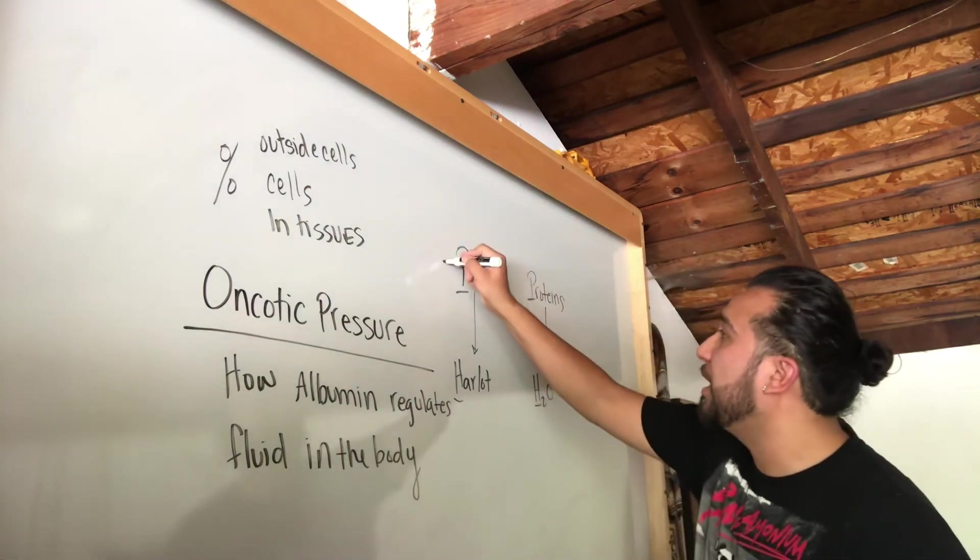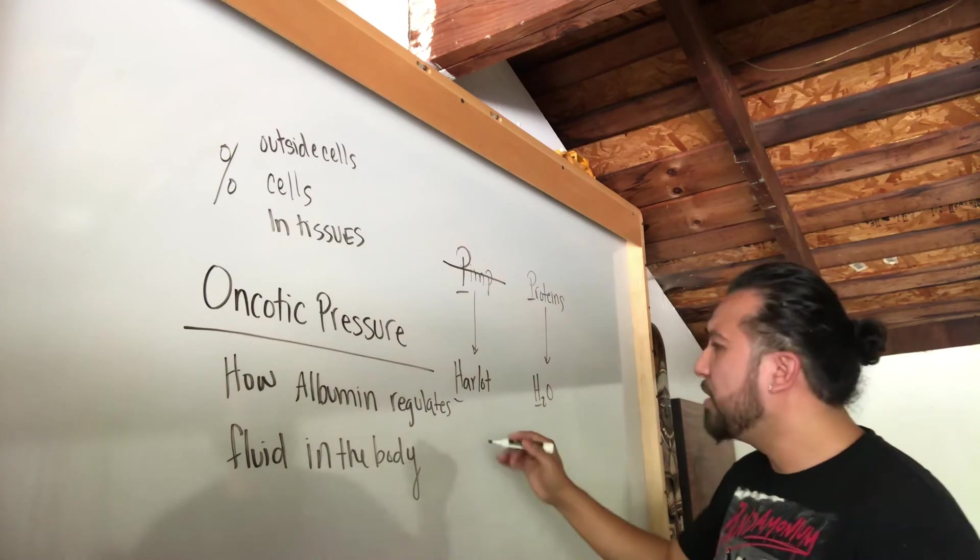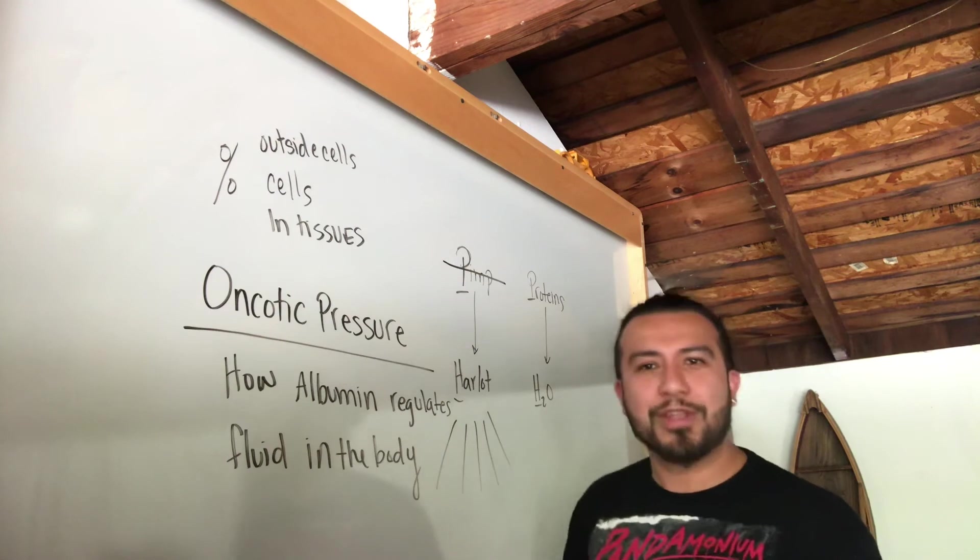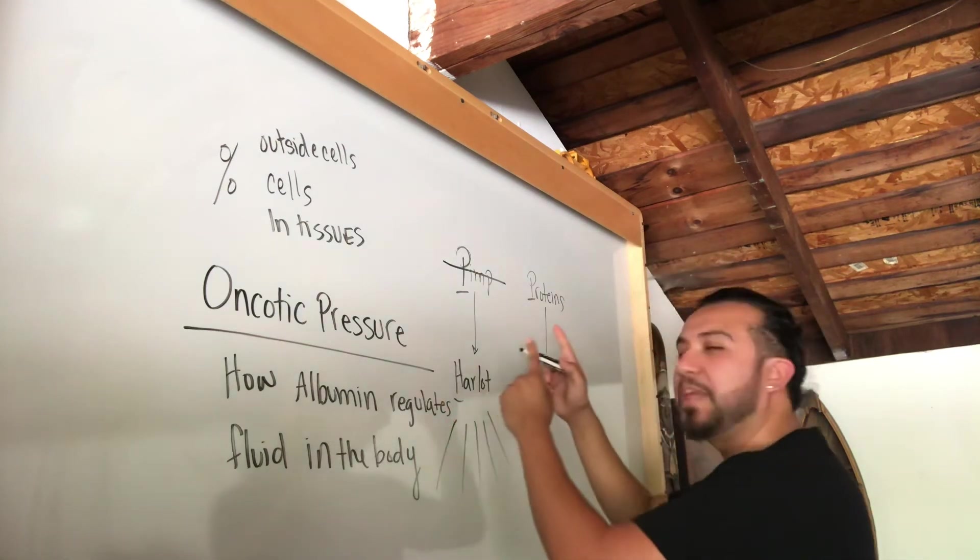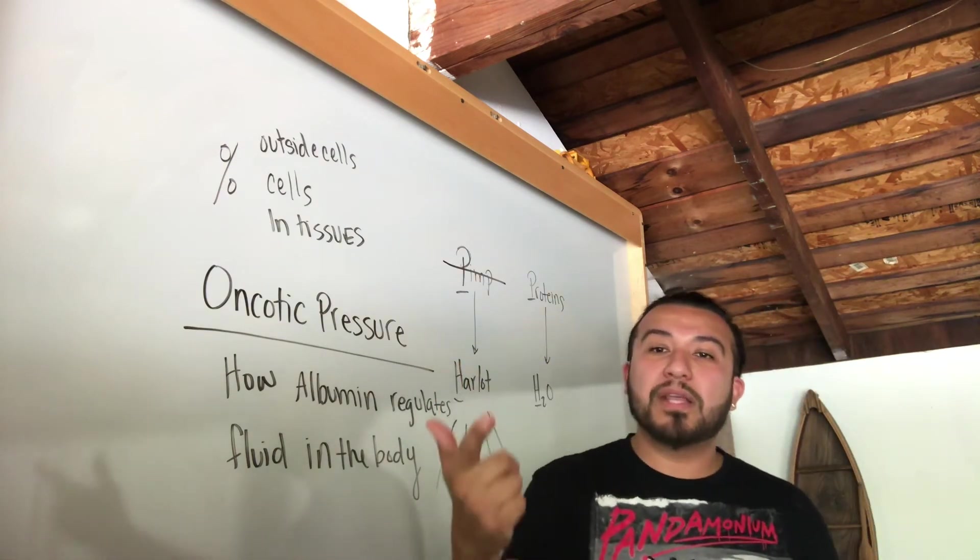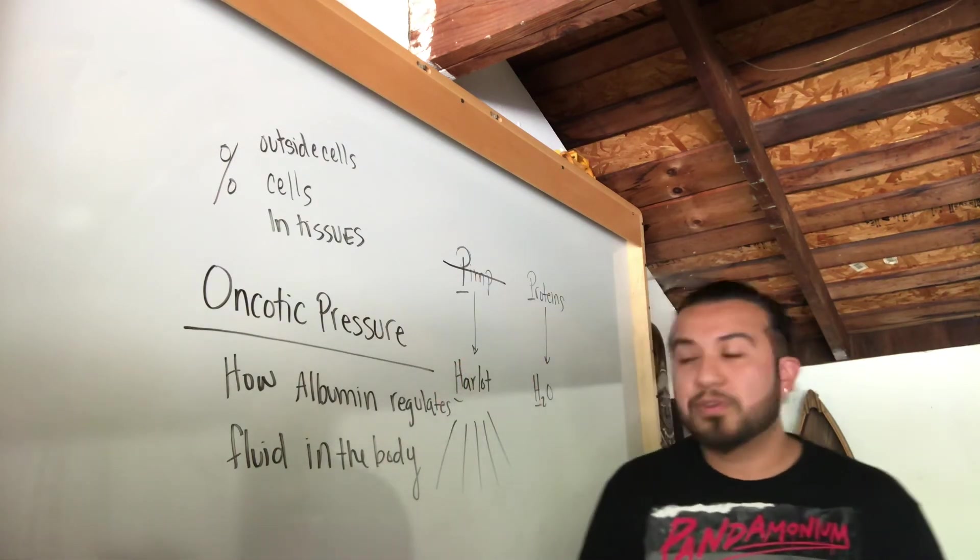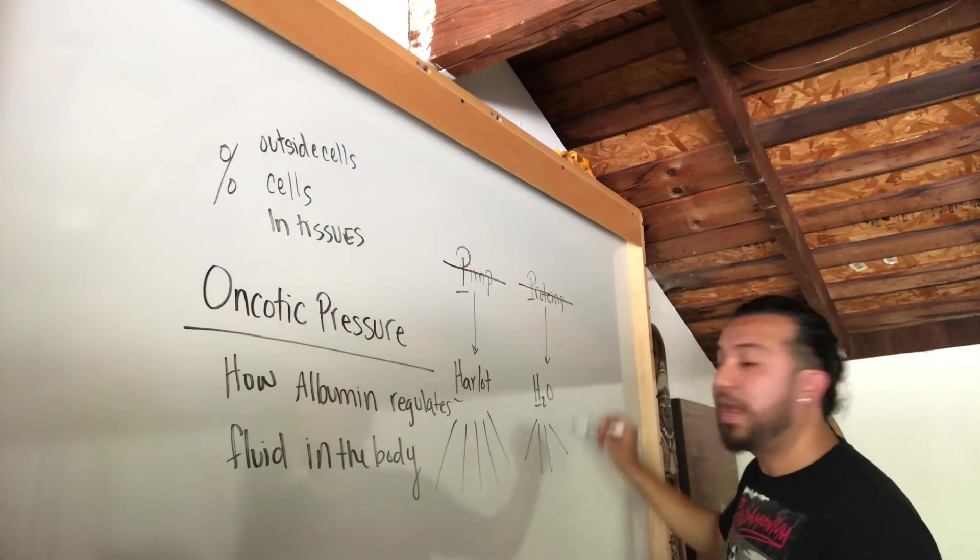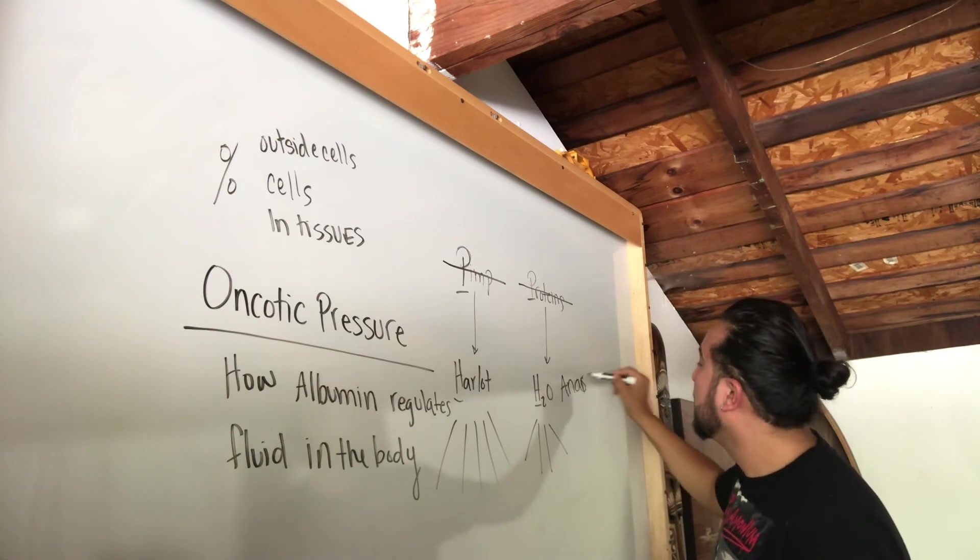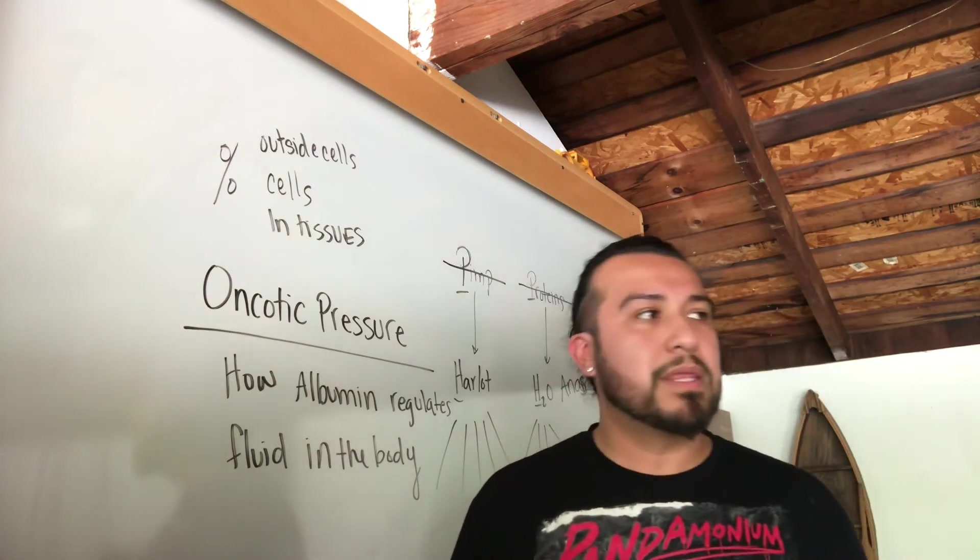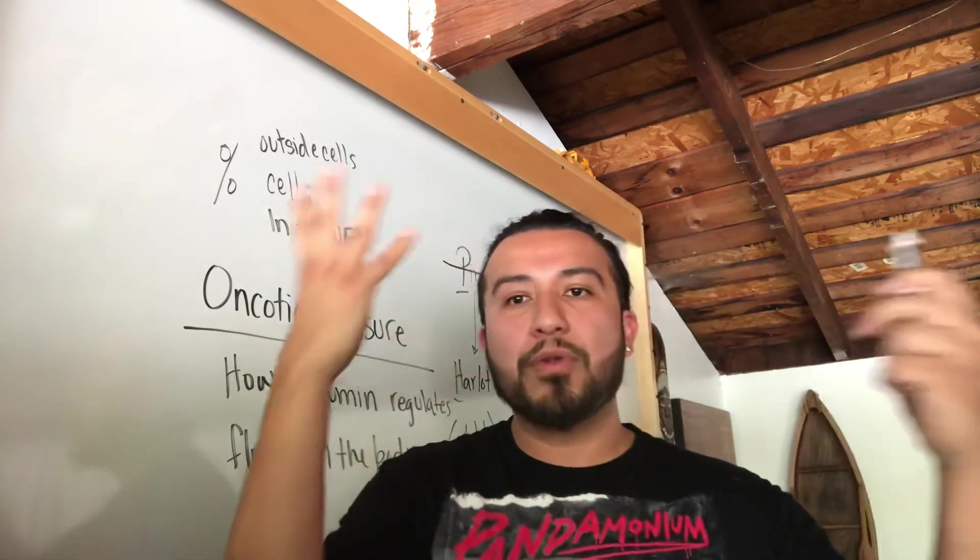So the analogy continues by saying that if the pimp gets arrested, well now the harlot is free and she could essentially go anywhere. And she goes down Gary Avenue strutting her stuff and looking all cool, right? Well you can apply the same concept to the proteins. If the proteins are either not being manufactured or they're being lost in glomerular nephritis and nephrotic syndrome, well the proteins are gone and now the water goes everywhere and you develop anasarca, which is generalized edema. And you'll see this with patients that develop, let's say nephrotic syndrome, they develop periorbital edema.